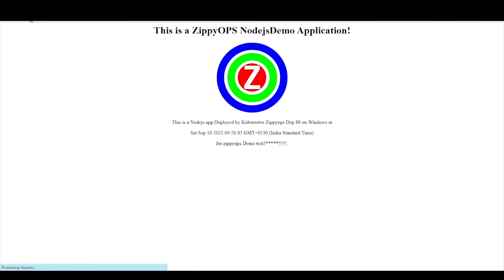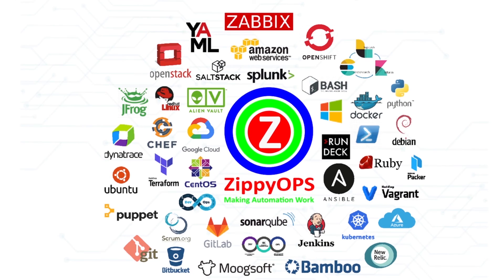This is the complete workflow of NodeJS application deployment on Azure Kubernetes Service Cluster on the Azure Cloud, using Azure DevOps. For more information, please browse www.zippyops.com. Please follow us on social media, links are available in the description. Like, share, and comment on this video. Subscribe to our channel for the latest happenings on DevOps. Thank you for watching this video.